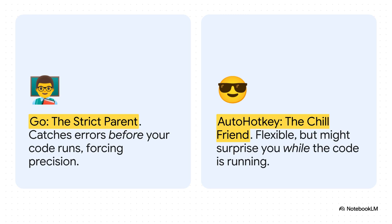It's statically typed, which is a fancy way of saying it checks all your homework for mistakes before you're even allowed to run the code. It forces you to be precise. AutoHotKey, though, is more like your chill friend. It's dynamically typed, super flexible, and it'll let you try pretty much anything — but that might lead to some unexpected surprises while the code is actually running.